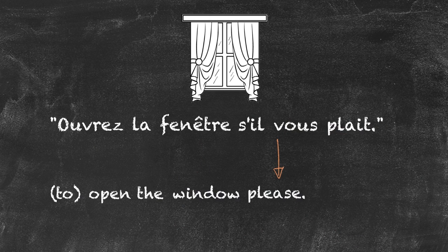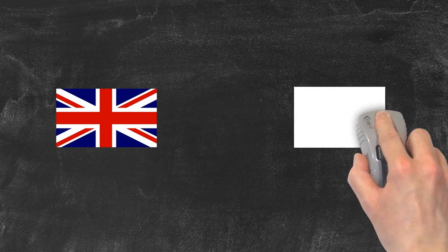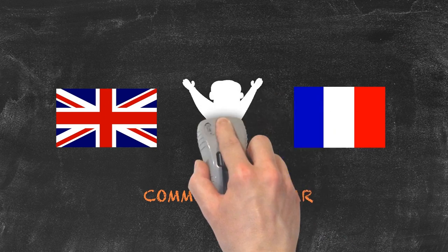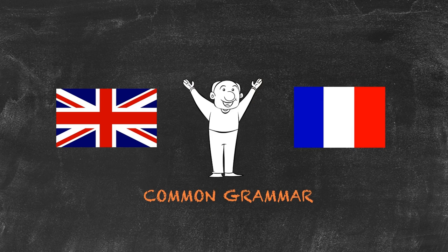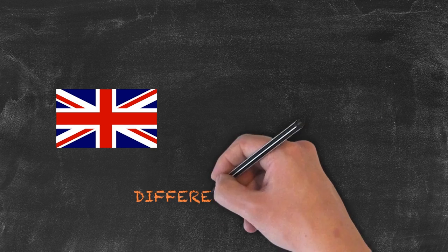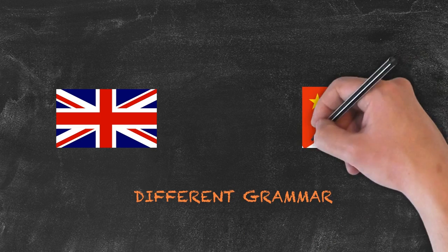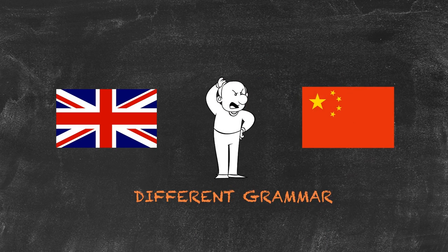This is all very well if the two structures we're translating between — the L1 and the L2 — have a common grammar, which French and English usually do. However, one problem with this classical method is that if the grammar structures are not the same, then it's very difficult to translate between the two.